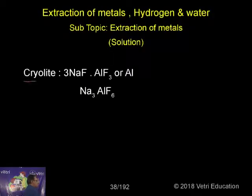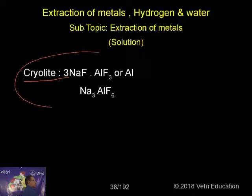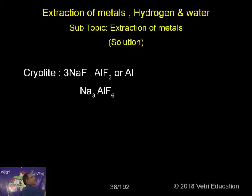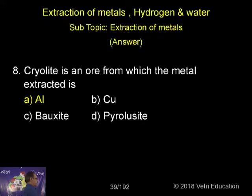So what is cryolite? Its formula is 3NaF·AlF₃, or Na₃AlF₃. So automatically we can now extract aluminium — that is, aluminium can be extracted from cryolite.